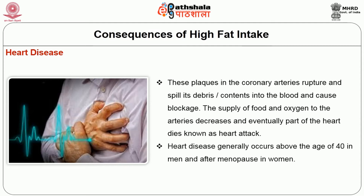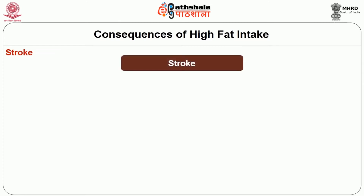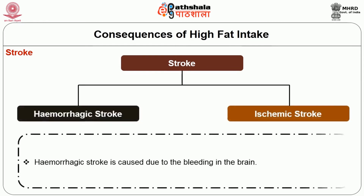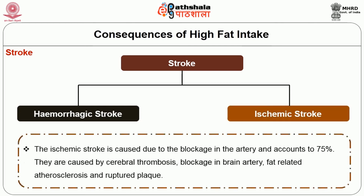Heart disease generally occurs above the age of 40 in men and after menopause in women. Stroke is the third leading cause of death. The two types of stroke are hemorrhagic stroke and ischemic stroke. Hemorrhagic stroke is caused due to bleeding in the brain. Ischemic stroke is caused due to blockage in the artery and accounts for 75% of strokes. They are caused by cerebral thrombosis, blockage in the brain artery, fat-related atherosclerosis and ruptured plaque.